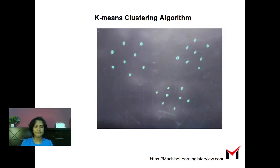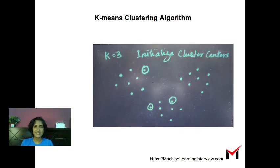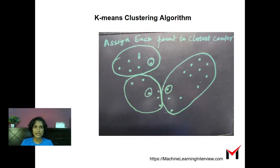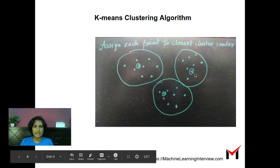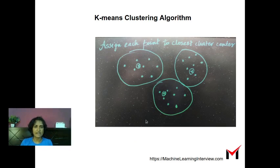Let's see this in action. Suppose these are the set of points you have. First, you initialize cluster centers — say k equals 3, so you pick three cluster centers to begin with. Then assign each point to the closest cluster center, as shown by the circles. Now compute new cluster centers as the centroids of the existing clusters, and once again assign each point to the closest cluster center. We already have better clusters after two iterations.